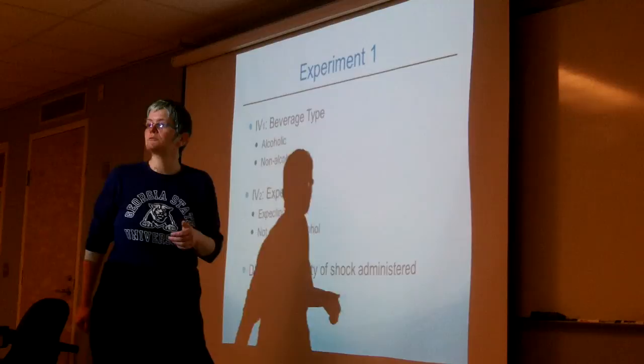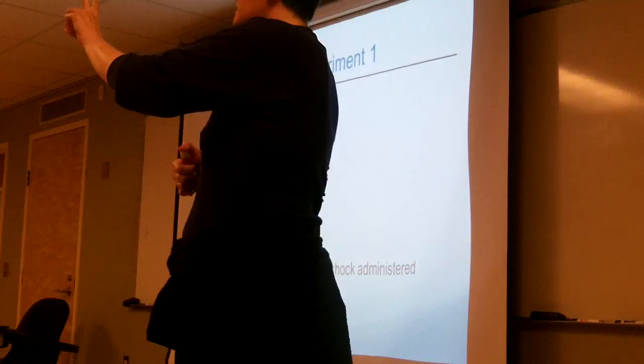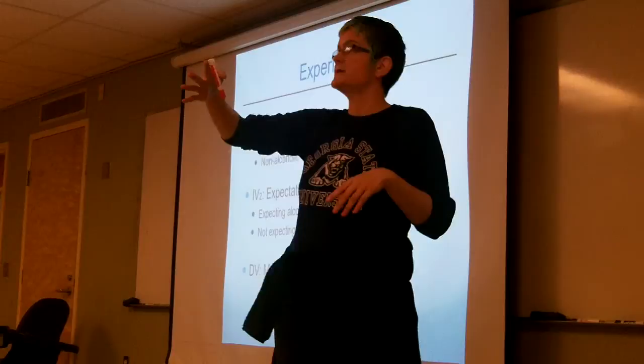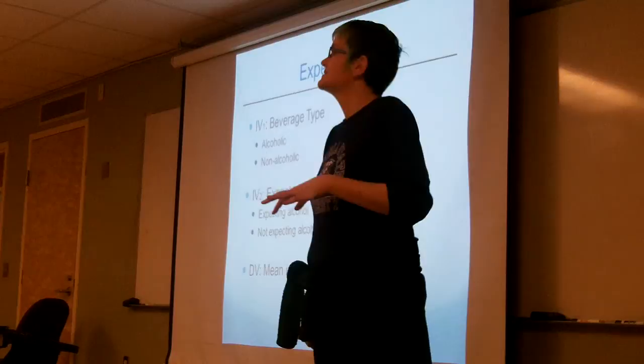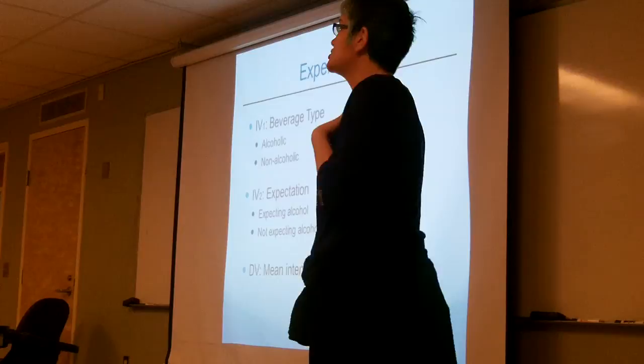What does two-by-two random groups factorial design mean? It means I have two IVs: the first IV has two levels and the second IV has two levels. Our first IV is beverage type - whether the beverage is alcoholic or non-alcoholic. Our second IV is expectation: do the subjects expect to get alcohol or do they expect to not get alcohol?